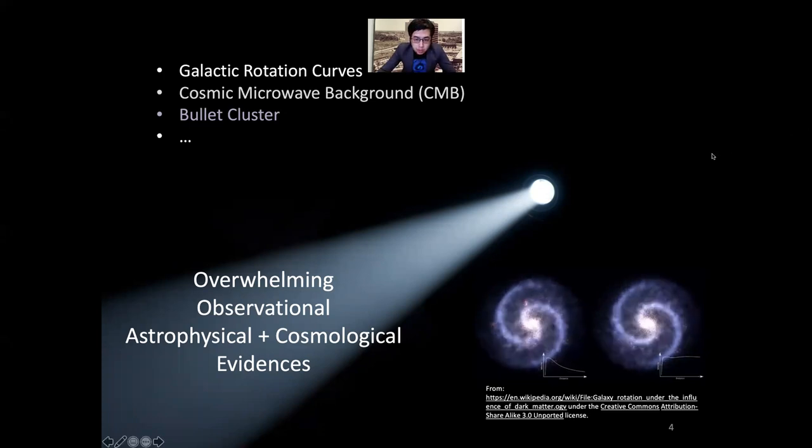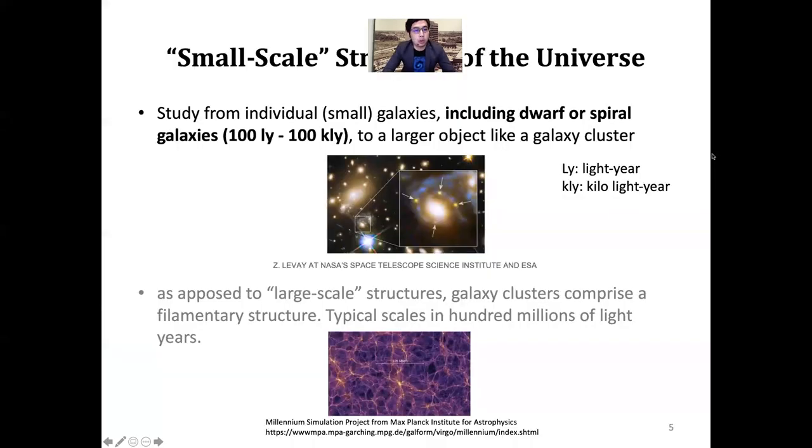This is our understanding of dark matter right now - we know next to nothing about it. But there are overwhelming observational, including astrophysical and cosmological evidences. As Vera Rubin told us, if you analyze the velocity distribution of rotating objects around the galaxy, you can infer that there is dark matter that is not visible.